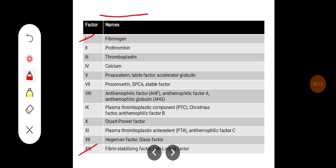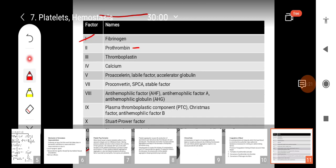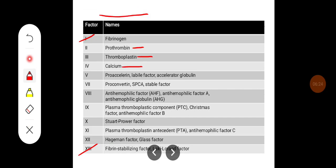The 13 clotting factors are: Factor 1 fibrinogen, Factor 2 prothrombin, Factor 3 thromboplastin, Factor 4 calcium, Factor 5 pro-accelerin, Factor 7 pro-convertin, Factor 8 anti-hemophilic factor, Factor 9 plasma thromboplastic component (Christmas factor), Factor 10 Stuart-Power factor, Factor 11 plasma thromboplastin antecedent, Factor 12 Hageman factor, and Factor 13 fibrin stabilizing factor.